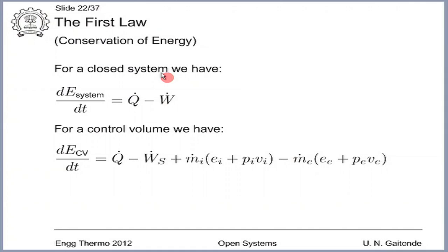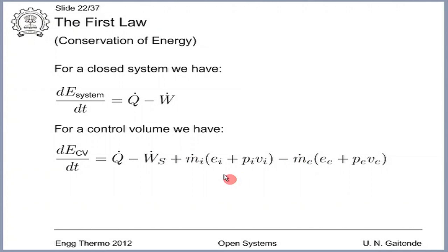We were on this slide where we compared the equation of the first law for the closed system and open system, and before that we looked at the much simpler equation of conservation of mass. If you have looked at the comparison, you will notice that the interaction terms remain the same, and terms pertaining to mass inflow and mass outflow get involved on the right hand side.